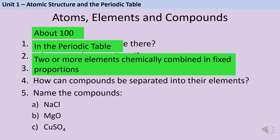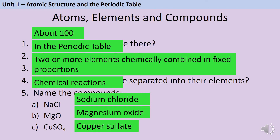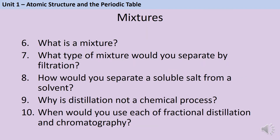Compounds can be separated back into their elements by chemical reactions. These compounds are named sodium chloride, magnesium oxide and copper sulphate. There isn't one official definition for a mixture, but you can think of this as a substance that contains more than one element where those elements are not always bonded in a fixed ratio — so that might mean they're not bonded at all, or sometimes they're bonded one way and sometimes another.